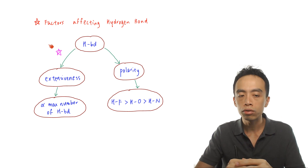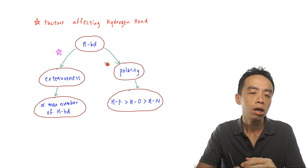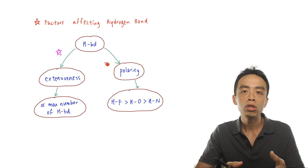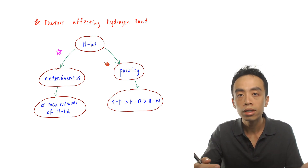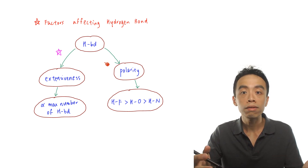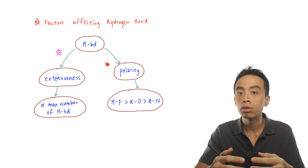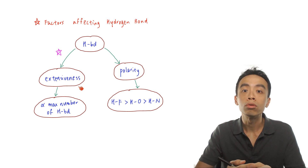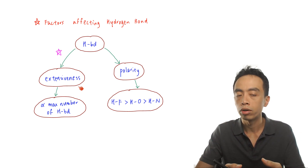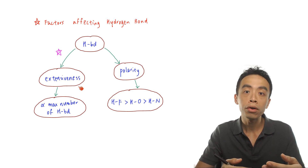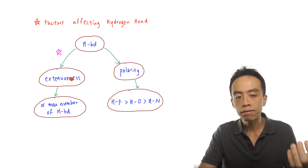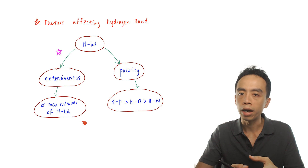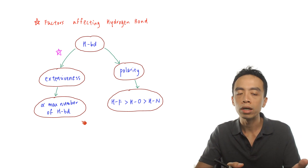We have two factors affecting the strength of hydrogen bond. The first one is the extensiveness of the hydrogen bond. The extensiveness simply means what is the number of hydrogen bonds each molecule can form with its neighbors. If a molecule can form more extensive hydrogen bonds — meaning per molecule it can form more hydrogen bonds with more neighbors — then during melting or boiling we need to pump in more energy to break more hydrogen bonds per molecule. So in general the boiling point or melting point tends to be higher. Extensiveness is affected by the maximum number of hydrogen bonds each molecule can form.